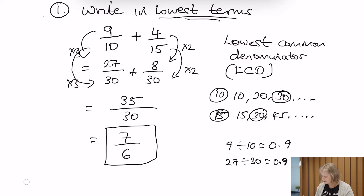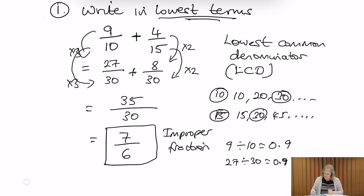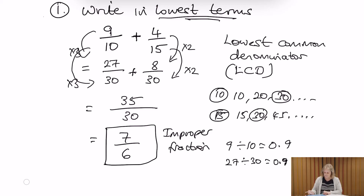Now this is what we call an improper fraction. It's fine to leave the answer like that unless you were given particular instructions to write the number in a certain way. So as an improper fraction, it's perfectly fine to leave the answer as 7 over 6.